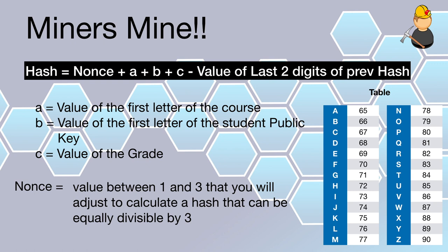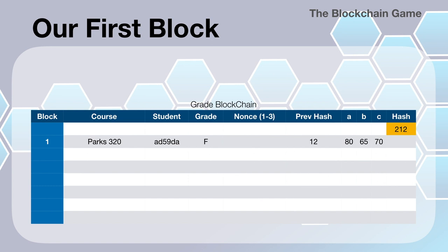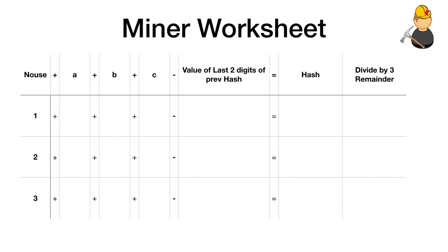For those with a computer science background, you may recognize this as the American Standard Code, or ASCII table. The nonce is a value that miners have to find — it's somewhere between 1 and 3 — and they adjust it to calculate a hash that is evenly divisible by 3. So the rule for our hash is that it has to be divisible by 3. I give miners a worksheet that helps them calculate this out quickly, though most mathematically inclined students can figure it out pretty fast.